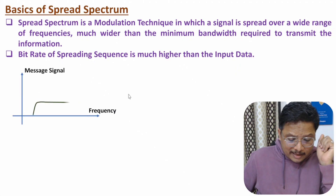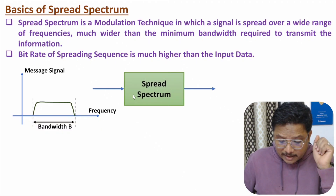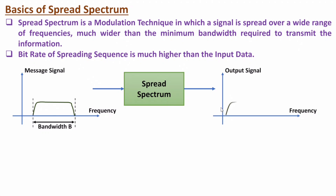Graphically: consider a message signal having narrow bandwidth B. After spread spectrum, the transmitted signal will have wider bandwidth denoted by Bss, which is way greater than B. For example, with a voice call the message signal has bandwidth of 3 to 4 kilohertz, but after CDMA spread spectrum the output signal is in terms of megahertz.